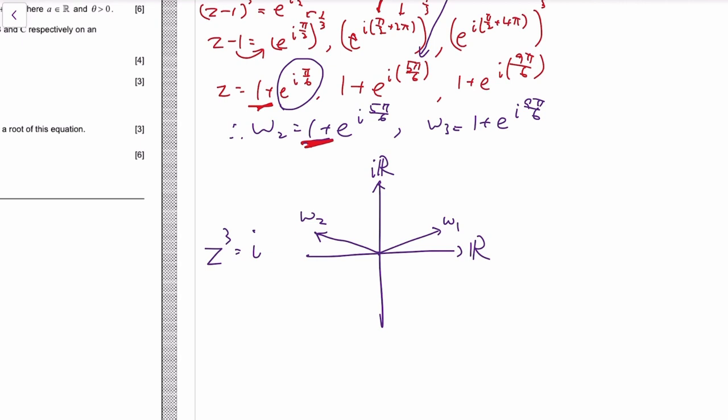So omega 3 is like 3 pi over 2. Yeah, this one can be simplified.